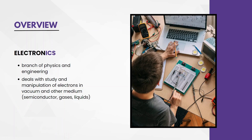To give an overview of electronics, the word can be divided into 'electron' plus 'ics', which means it involves the movement of electrons. So it is a branch of physics and engineering that deals with the study and manipulation of electrons in various mediums.